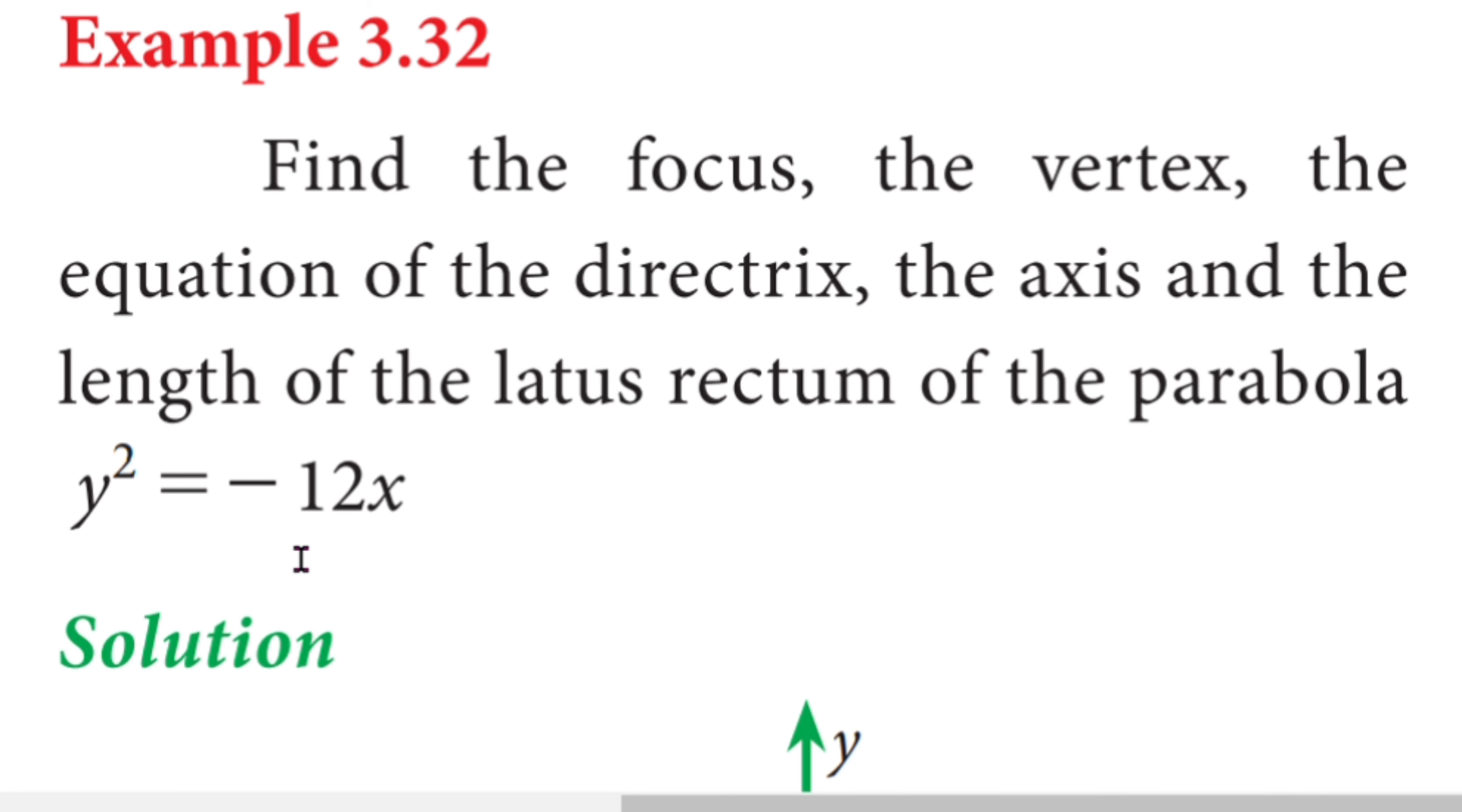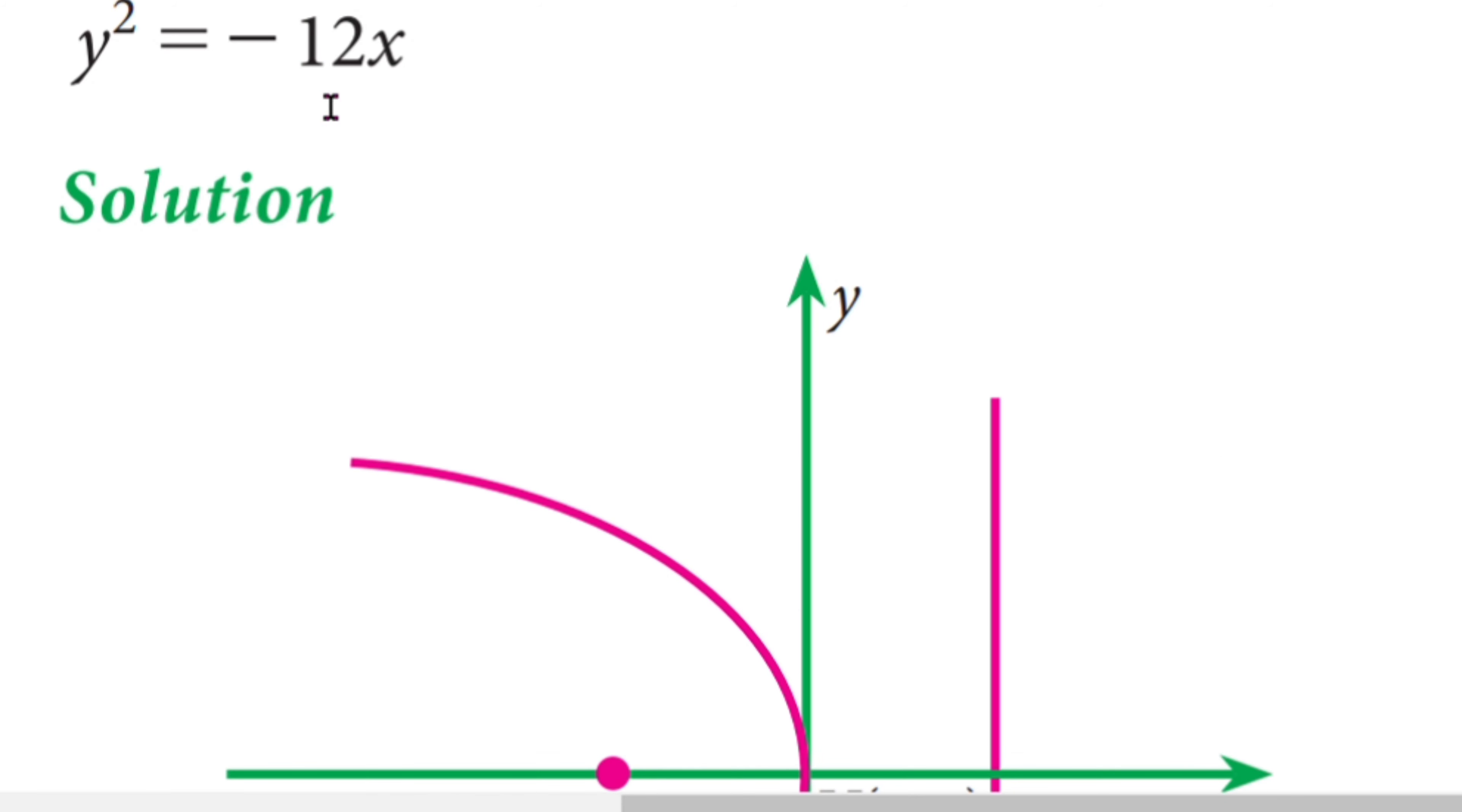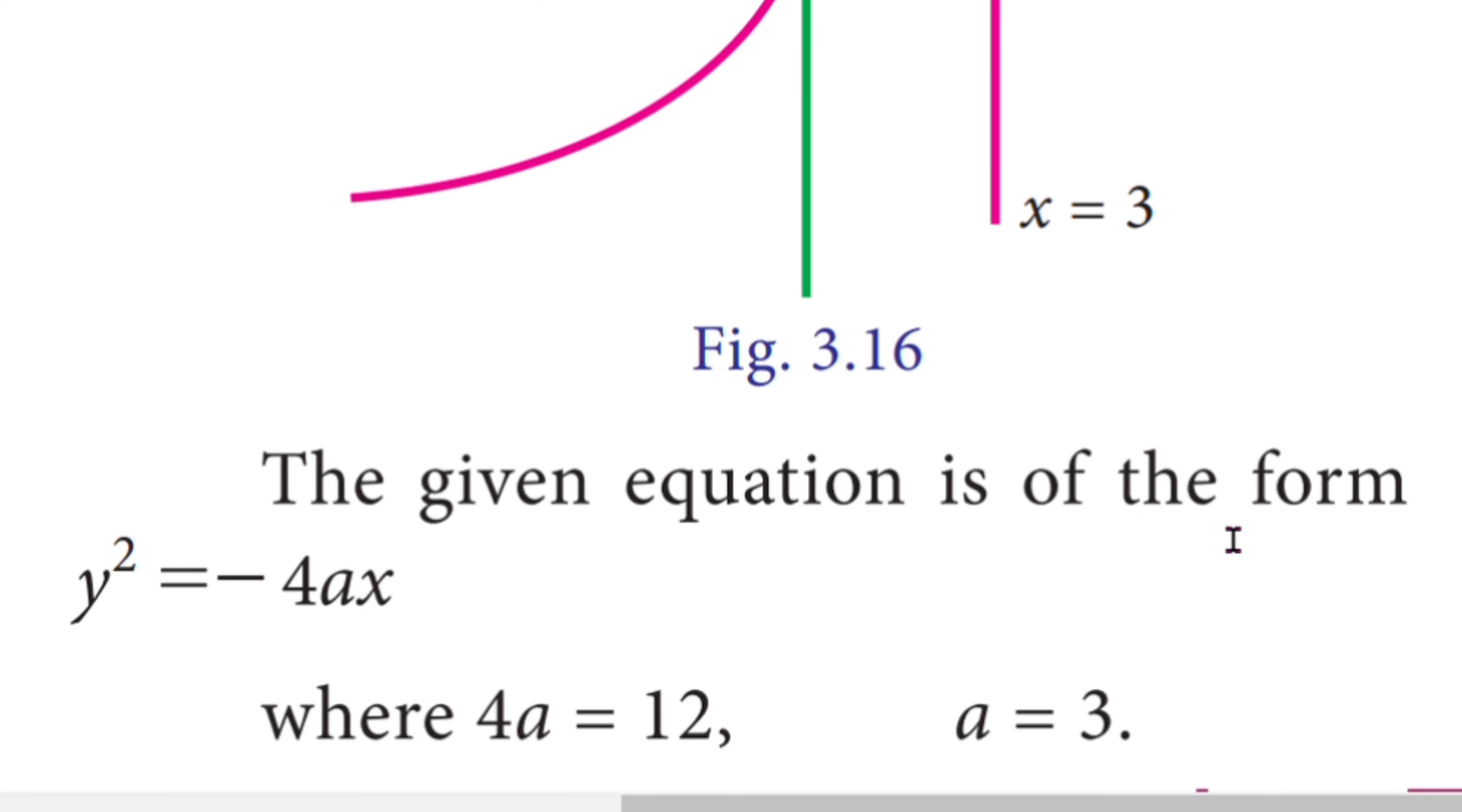This is an open leftward parabola. The parabola y² = -4ax opens leftward. To determine 4a, the given equation is of the form y² = -4ax.